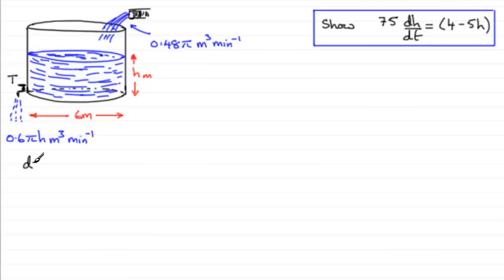So what we've got first of all is that dV/dt equals, well we've got the water coming in, so we've got a volume per minute of 0.48π cubic meters per minute coming in. But then we've got this leaving, so we need to subtract 0.6πh. So this is the rate of change of volume in cubic meters per minute.